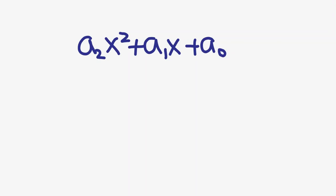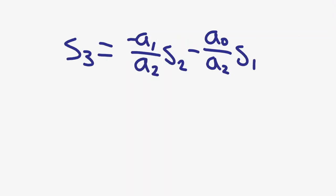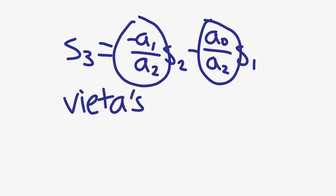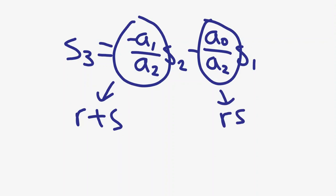Then we can write the expression we derived before as s₃ = (-a₁/a₂)s₂ - (a₀/a₂)s₁. The coefficients -a₁/a₂ and a₀/a₂ were from Vieta's formulas, as they represent r + s and rs.